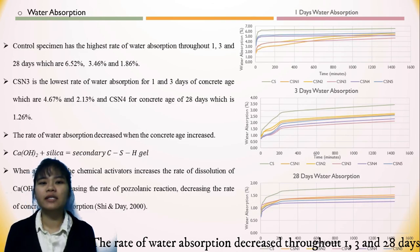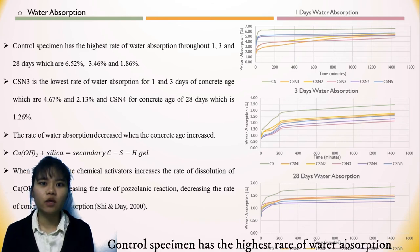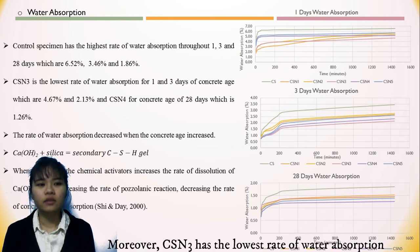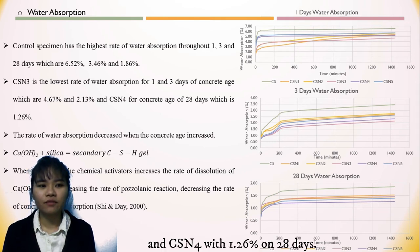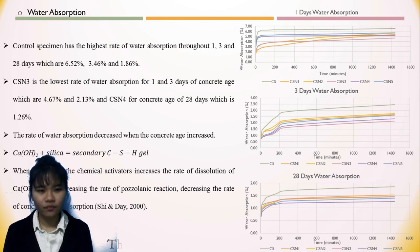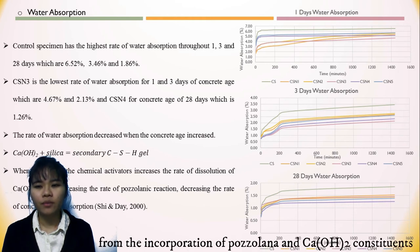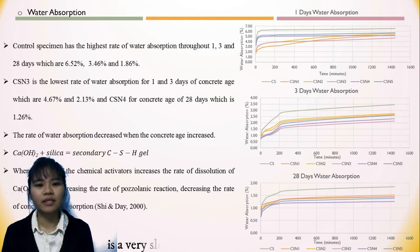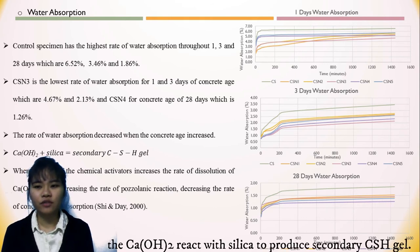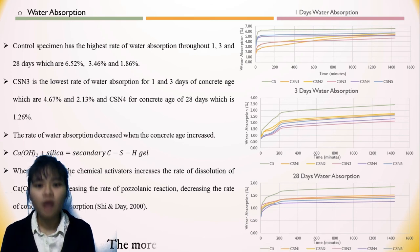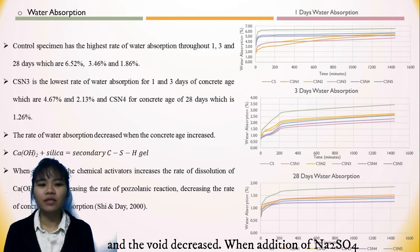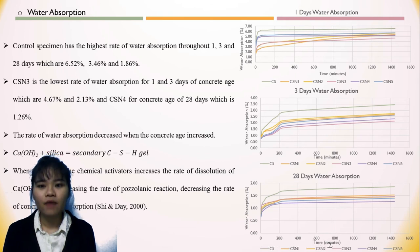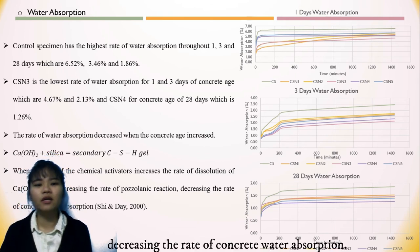The rate of water absorption decreases throughout 1, 3, and 28 days. The control specimen has a higher rate of water absorption throughout the concrete age. The CSN3 mix has a lower rate of water absorption. The increase in pozzolanic activity means calcium hydroxide constitutes a very low rate. From the pozzolanic reaction, calcium hydroxide reacts with silica to produce secondary CSH gel. More CSH gel fills in the voids of the concrete, making the internal structure more compact and decreasing the voids. When the addition of sodium sulfate increases the rate of dissolution of calcium hydroxide, it also increases the rate of the pozzolanic reaction, thereby decreasing the rate of water absorption.